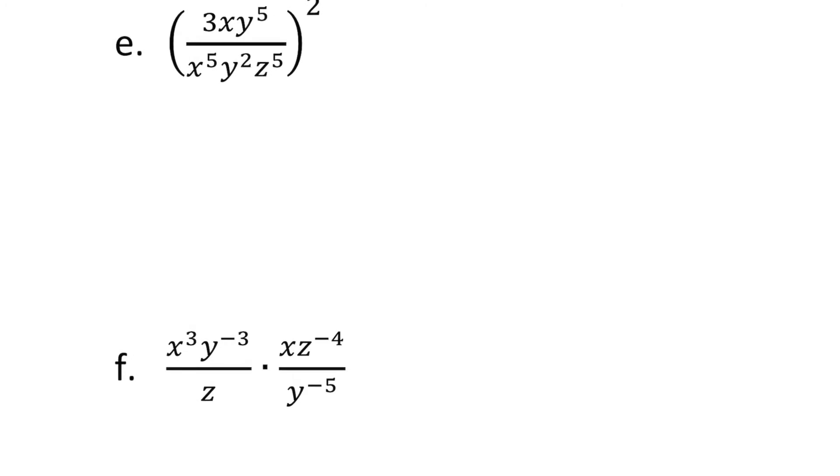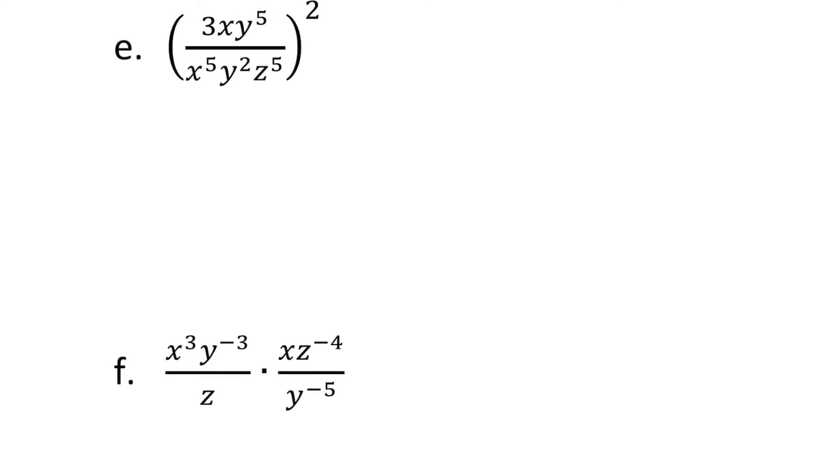If you look at e, I'm going to choose to simplify inside my parentheses first. You could square the whole thing and then simplify, but I think it's easier to simplify inside first. So I could divide out one common factor of x and just have four factors of x left out in my denominator. And then 5 minus 2 would leave you with three factors of y. And you can always write them out and think about it. If I divide out that one common factor of x, there are four left.